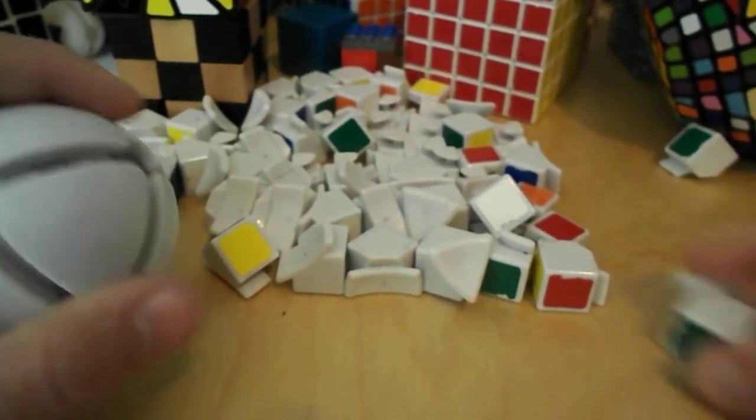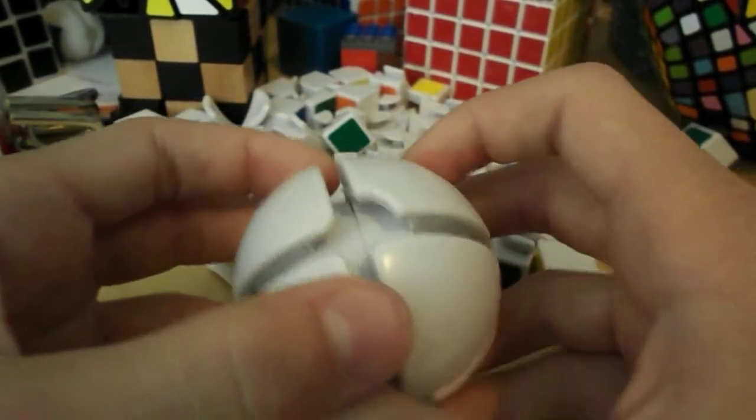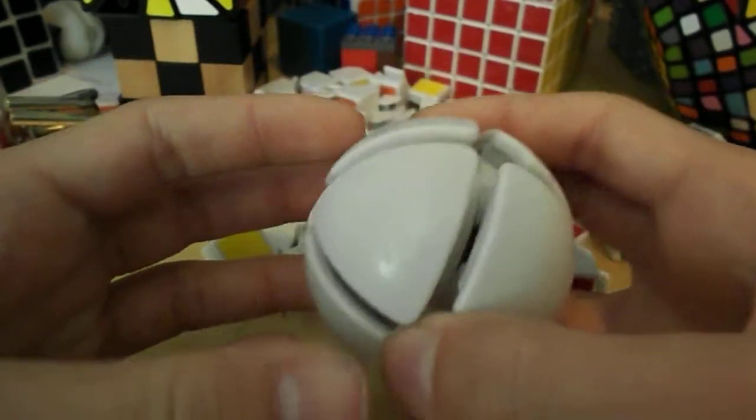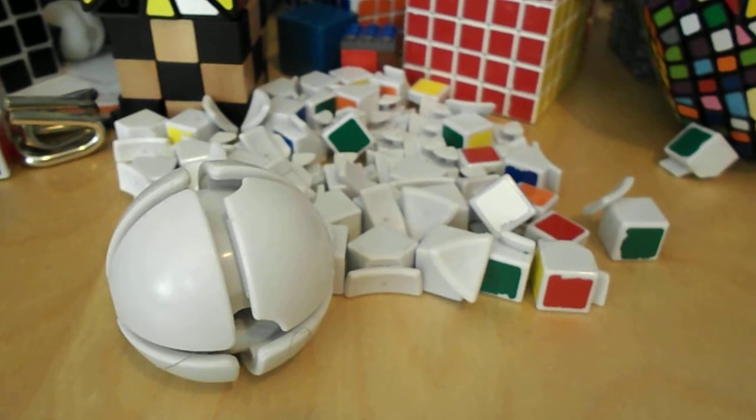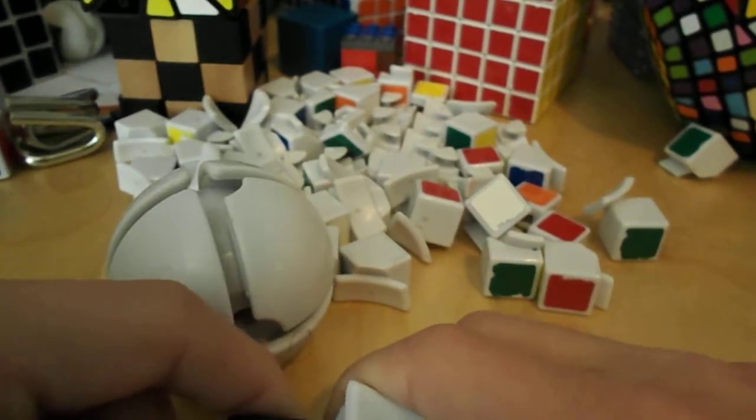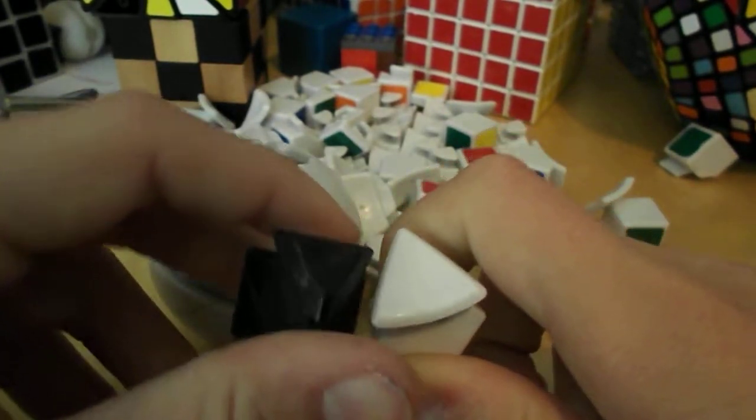Now that we have done the easy part of disassembling it, now we've got to reassemble it, and the core looks like this, pretty similar to a Rubik's brand 4x4. I've got a corner here. Yeah, they look very similar. I'm not sure if it's a knockoff or not.